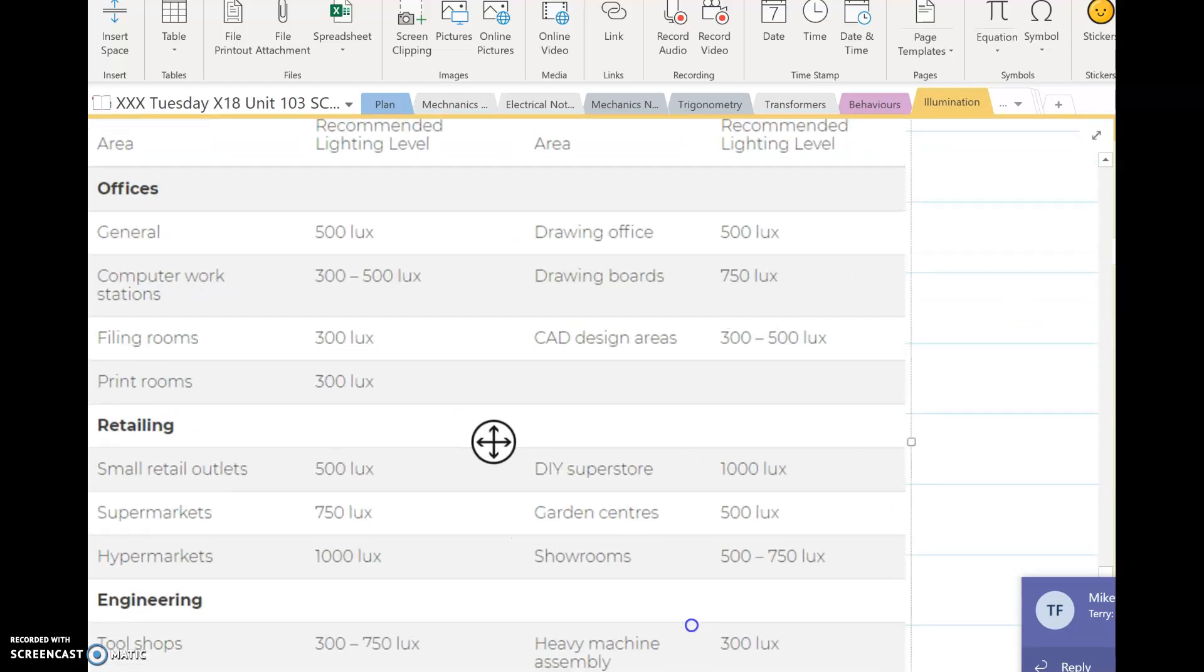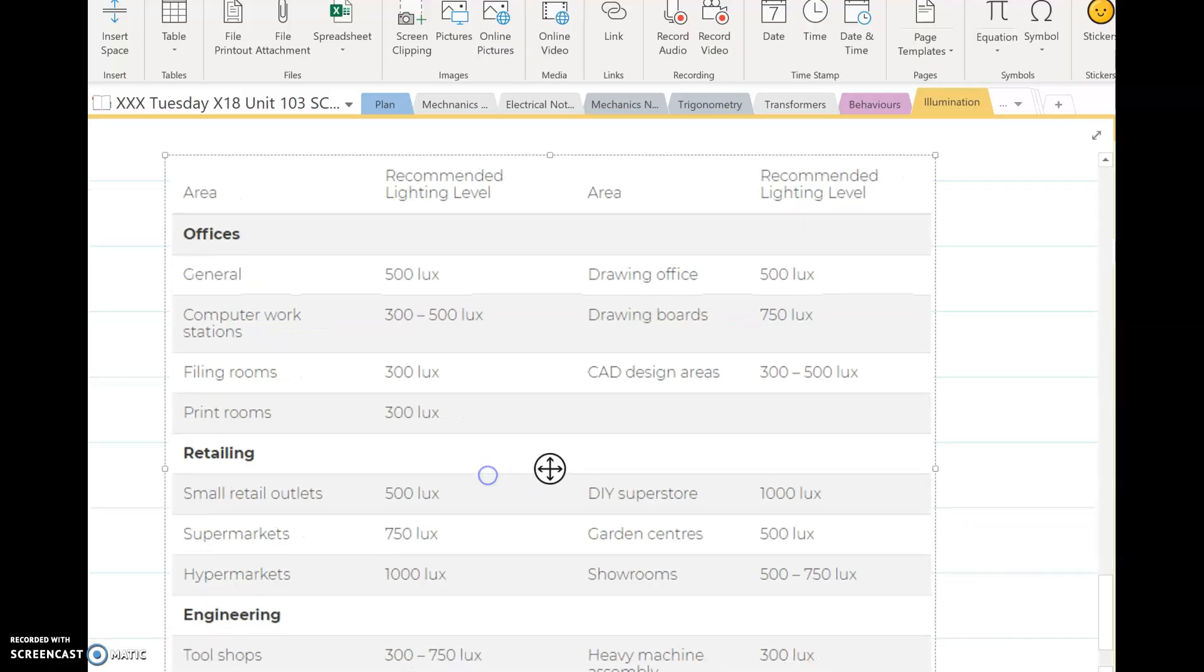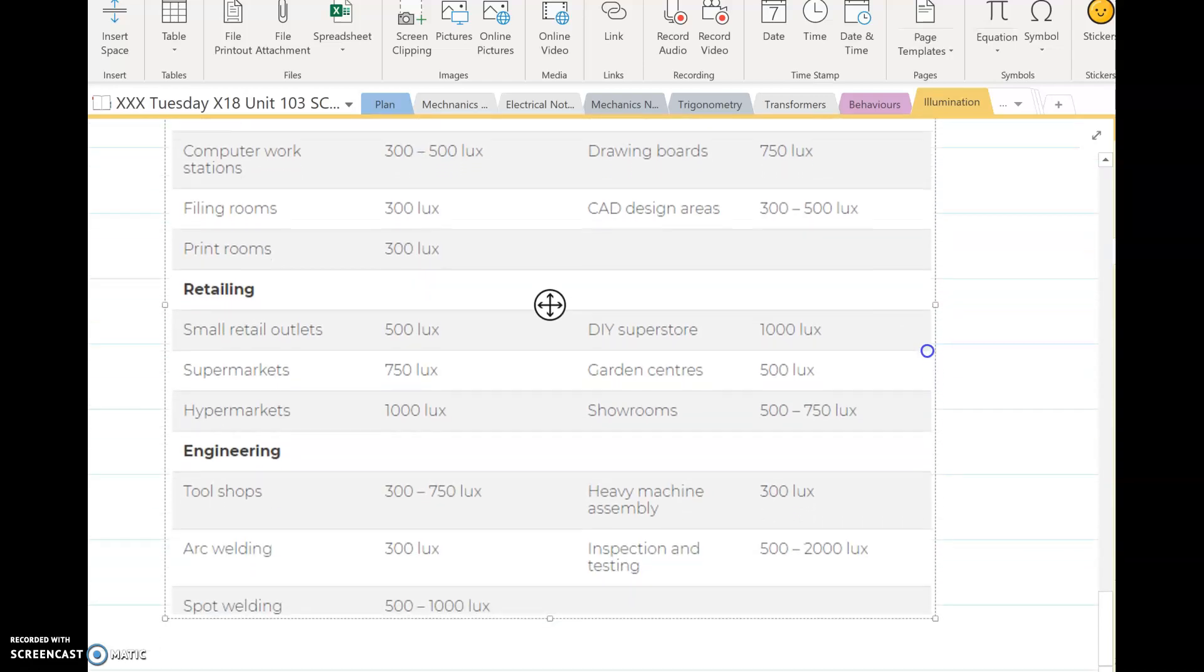Basically, if we look at the recommended light levels, for CIBSE, the Chartered Institute of Building Service Engineers guides, they say the following levels. Offices, general work areas, 500 lux. Drawing boards, 750 lux, so it depends on the activity that's going on. If it's a computer room, like offices, workstations, it's quite a low lux area because you don't want a lot of glare off the lights, because people are tuned into the monitors.